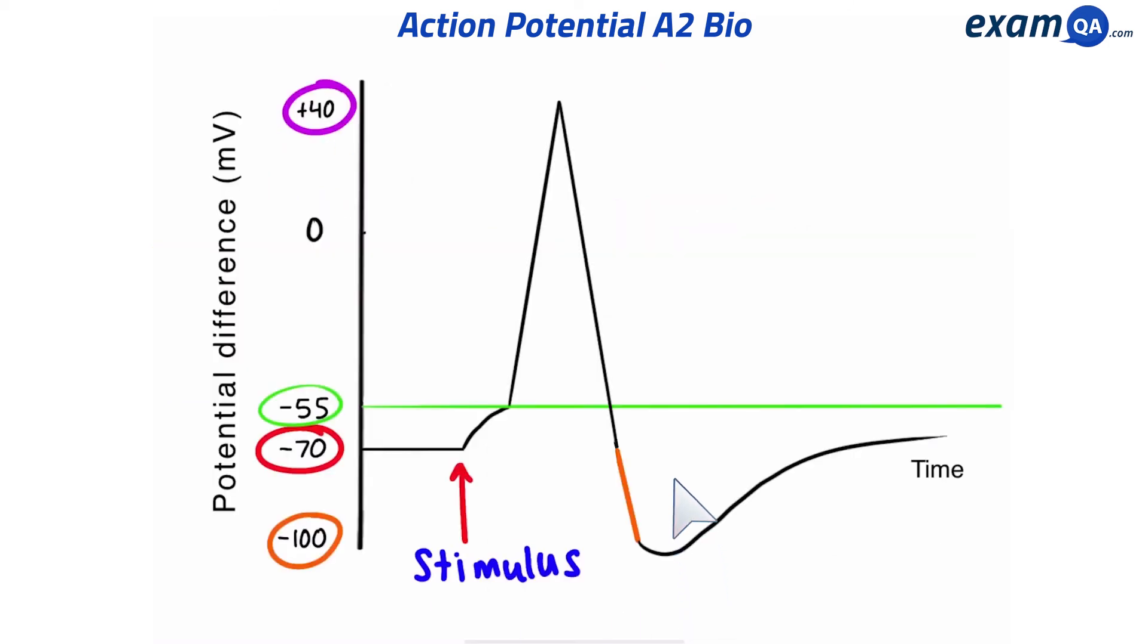Okay, let's look at this graph in a bit more detail and label the different parts. Starting at minus 70, we have the resting membrane potential. Then, a stimulus occurs and causes some sodium channels to open up. This creates a generator potential.